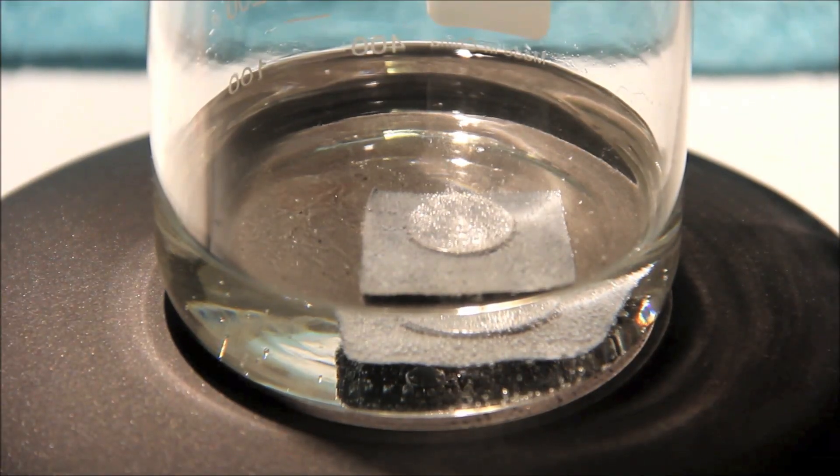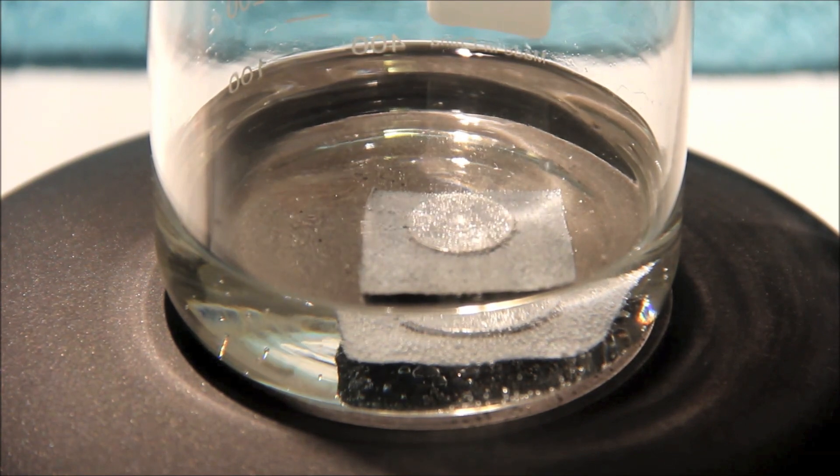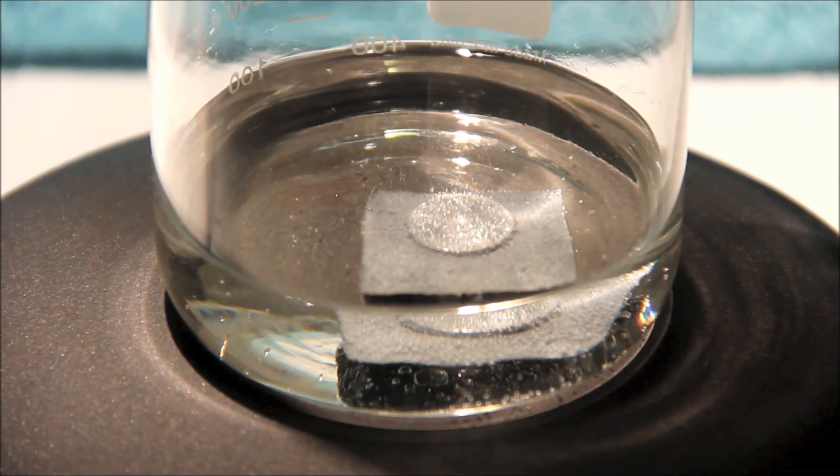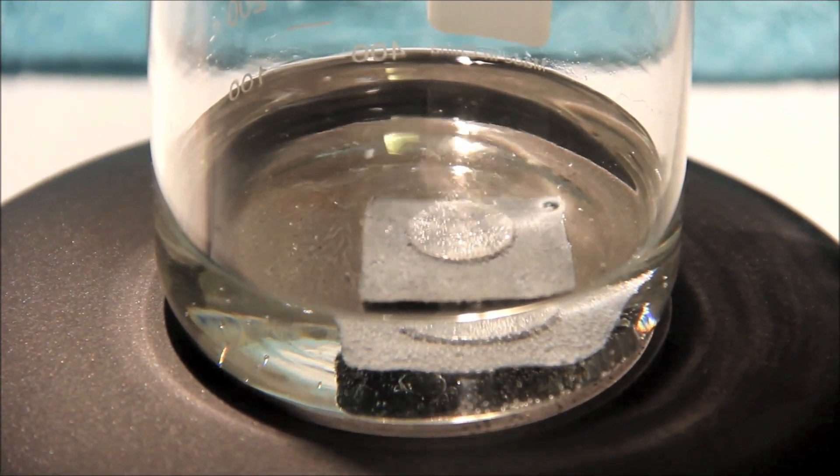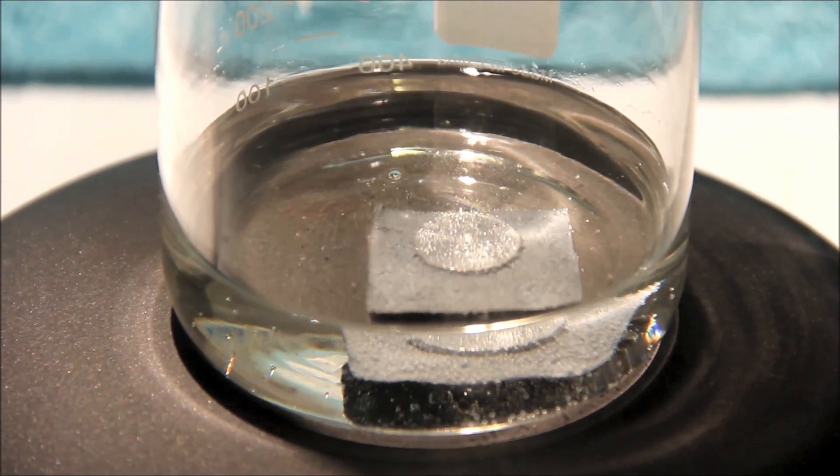Here is the penny after a few minutes of leaving the hot plate on. You can see that it's changed to the silver color of zinc metal. That is because it has been plated in zinc. I also flipped the penny over to ensure both sides of the penny were completely plated in zinc metal.